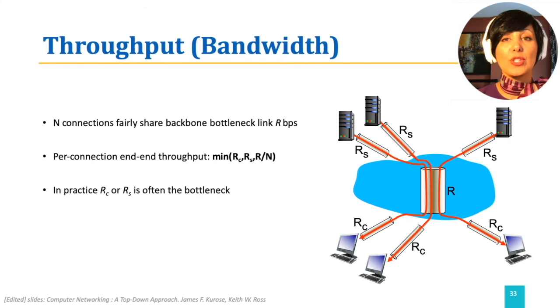It is worth noting, due to reasons we will discuss later, in practice, usually either RC, the access link capacity of the receiver, or RS, the access link capacity of the sender, is the bottleneck.